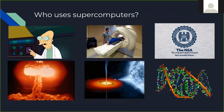So who uses supercomputers? Traditionally it's been physicists, chemists, and engineers. In the past 20 years or so, quite a few more fields have started using supercomputers. Geneticists and other life scientists have started using them for genetic sequencing and protein folding. Economists, statisticians, and the government also use them. Machine learning and artificial intelligence have exploded over the past five years or so on supercomputers.